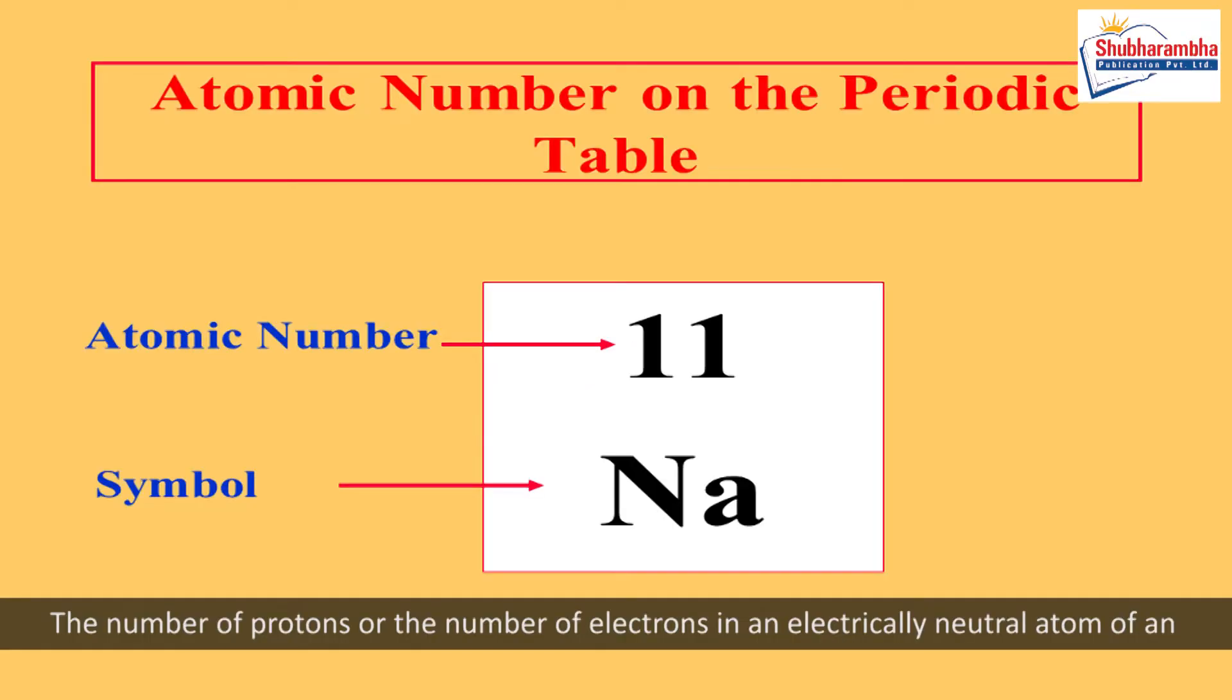Atomic number. The number of protons or the number of electrons in an electrically neutral atom of an element is called atomic number. It is denoted by Z. Atomic number always determines the chemical characteristics of the elements. Each element has its own atomic number.